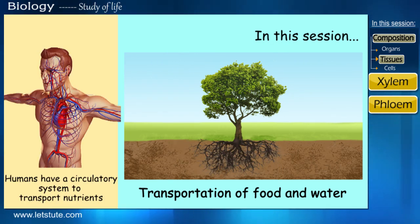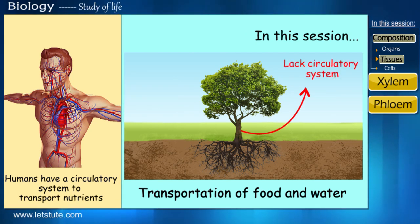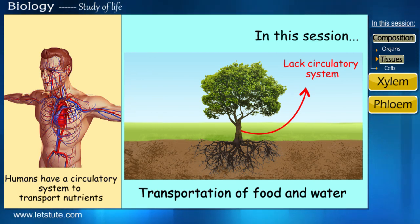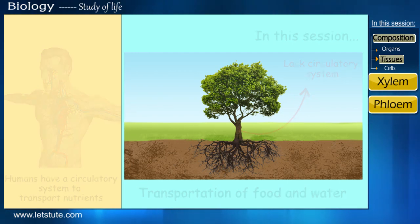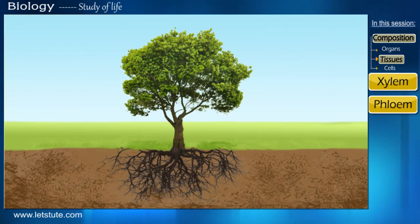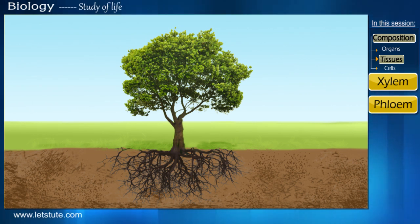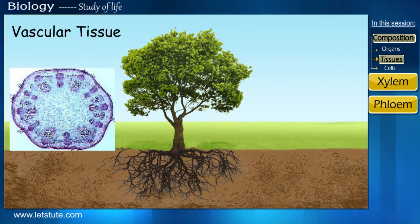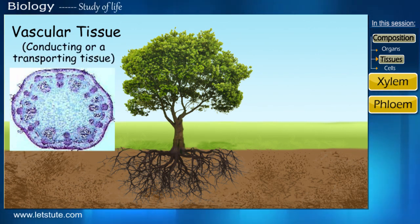But unlike humans and animals, plants lack a circulatory system — like blood, veins, or arteries — to provide all the nutrients to its parts. So what makes them transport food and water to the entire plant body? They have a specialized form of tissue to carry out this function called the vascular tissue, which is nothing but a conducting or transporting tissue.